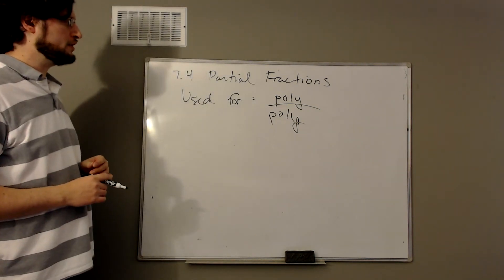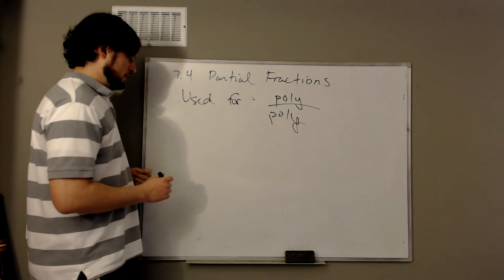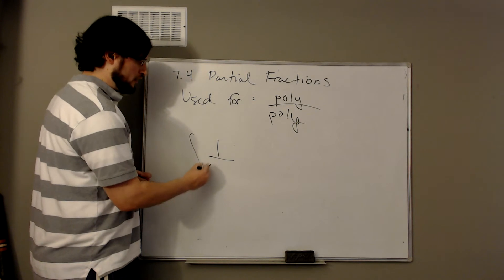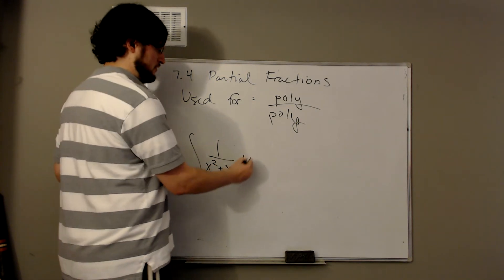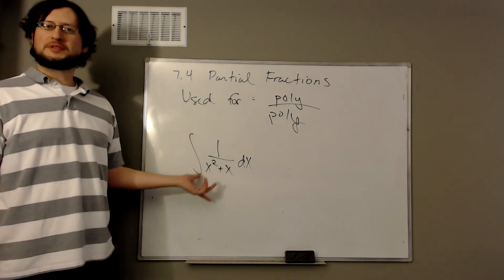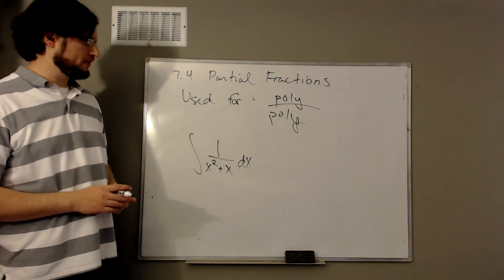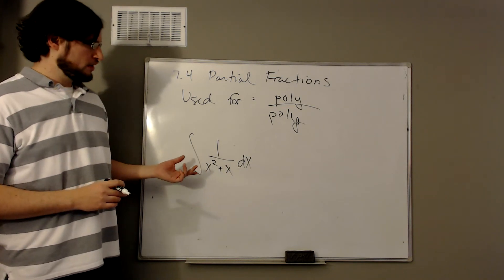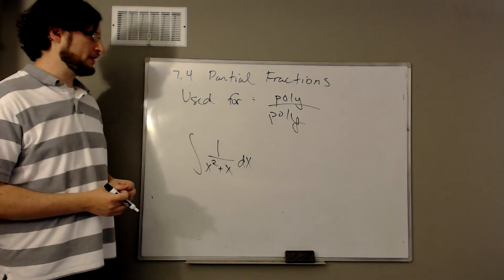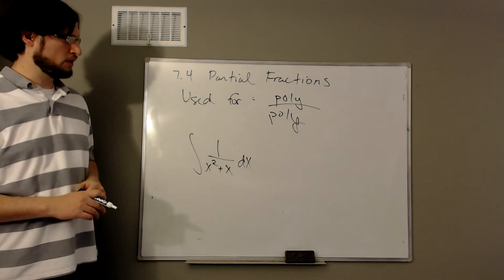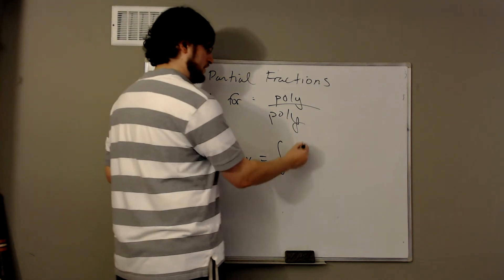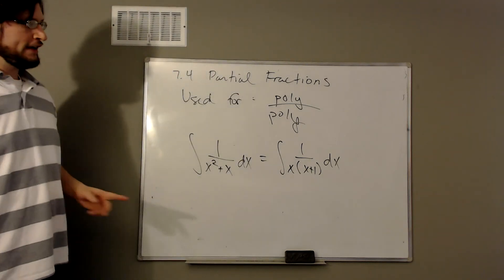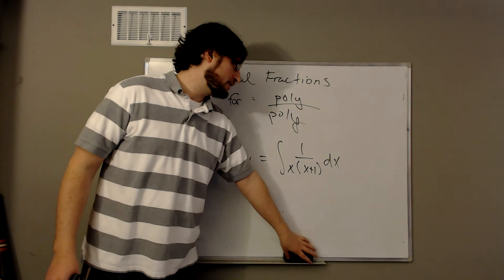I'm going to give you the big idea of what's going on here, and then we'll look at some individual examples. Suppose that I wanted to integrate 1 over x squared plus x. A u-substitution doesn't work, it's not integration by parts because there's no product, and it's not a trig substitution. So none of our favorite things are going to work. We look at this as 1 over x times x plus 1 by factoring out an x.